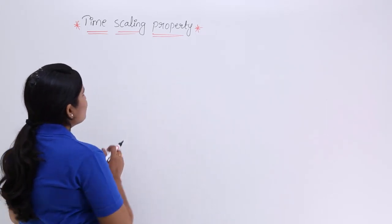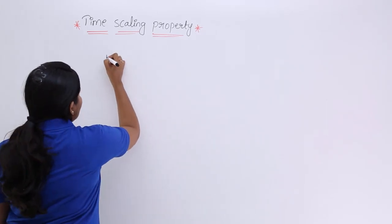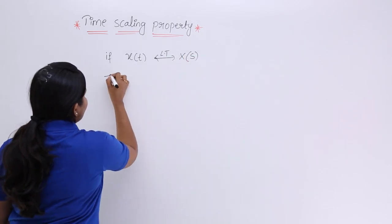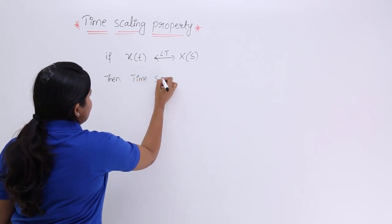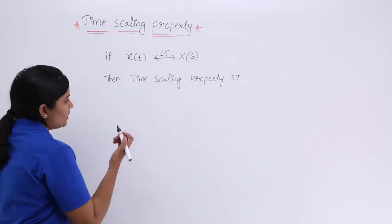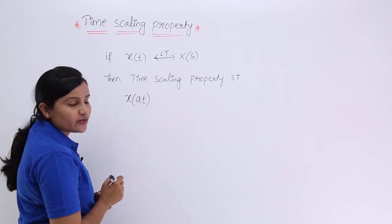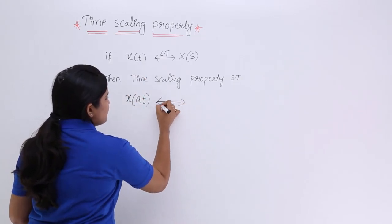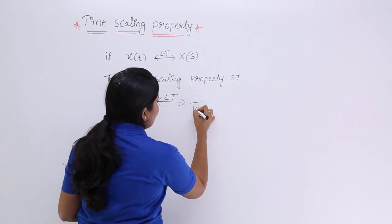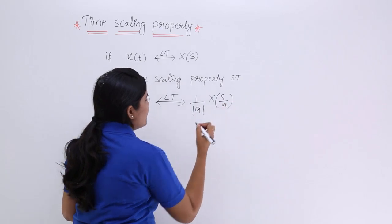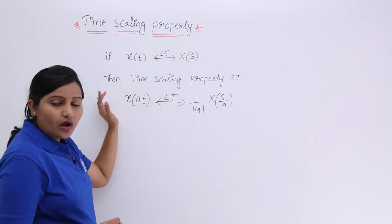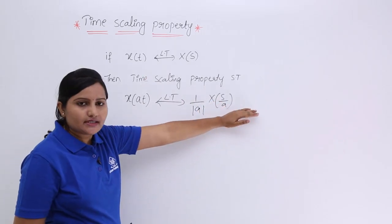For better understanding, consider any signal x(t). If x(t) has Laplace transform X(s), then the time scaling property states that x(at) is a time-scaled version of the signal. The Laplace transform of the scaled version is equivalent to (1/|a|) · X(s/a). That means if x(t) has spectrum X(s), the spectrum changes when we scale the time, becoming (1/|a|) · X(s/a).